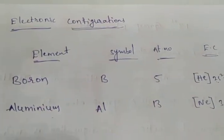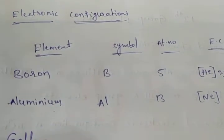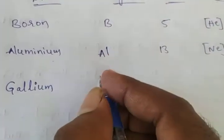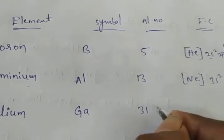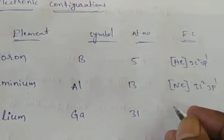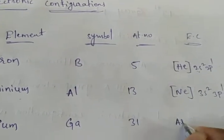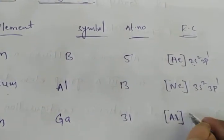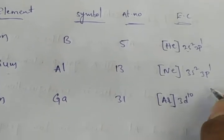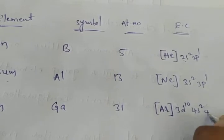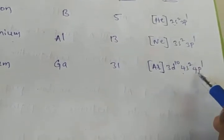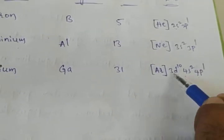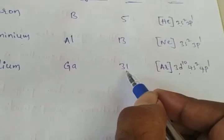The next element is gallium. The symbol of gallium is Ga and the atomic number is 31. The electronic configuration is [Ar] 3d¹⁰ 4s² 4p¹. Here, compared to aluminium's 3s² 3p¹, we now have 4s² 4p¹ with an additional 3d¹⁰. The atomic number is increasing, so shells are also increasing going down the group.